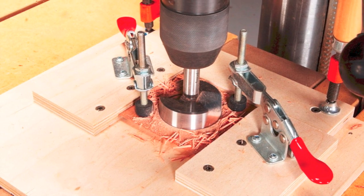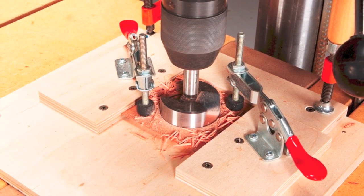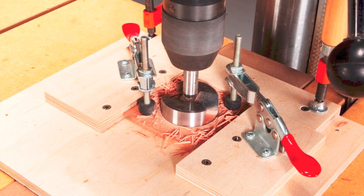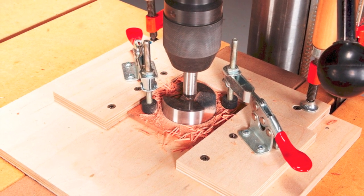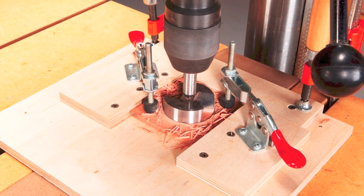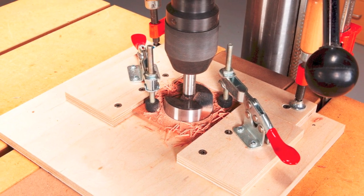Drill a 2⅛ inch diameter hole in the center of each piece using a Forstner bit. This jig locks in the piece on three sides to ensure that it doesn't shift. Toggles keep your fingers out of the way.